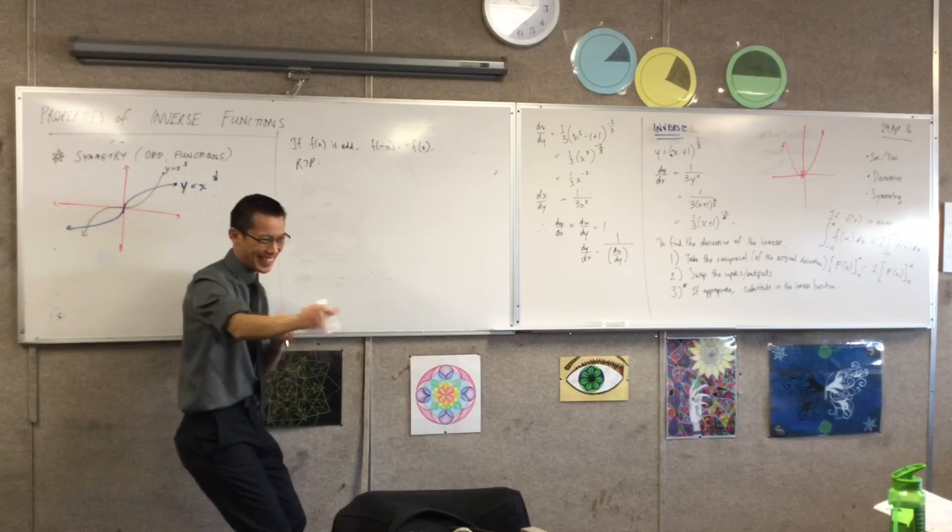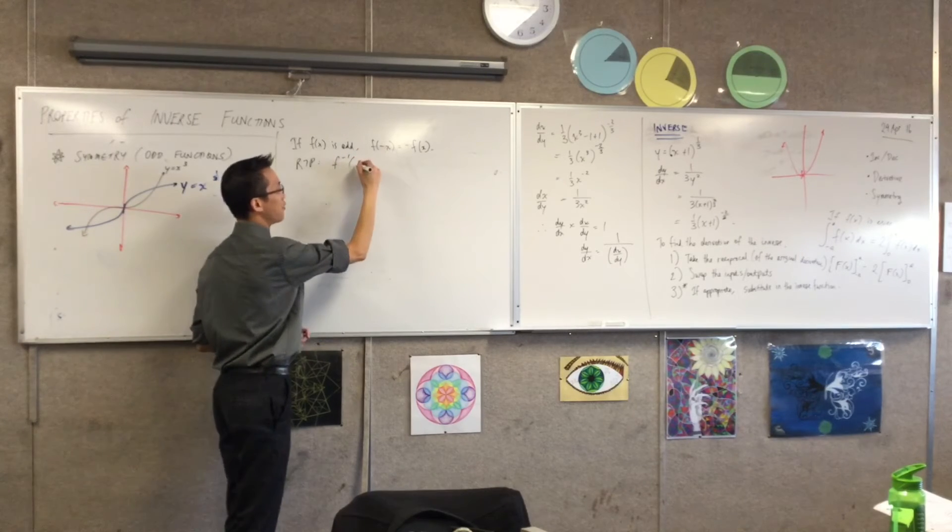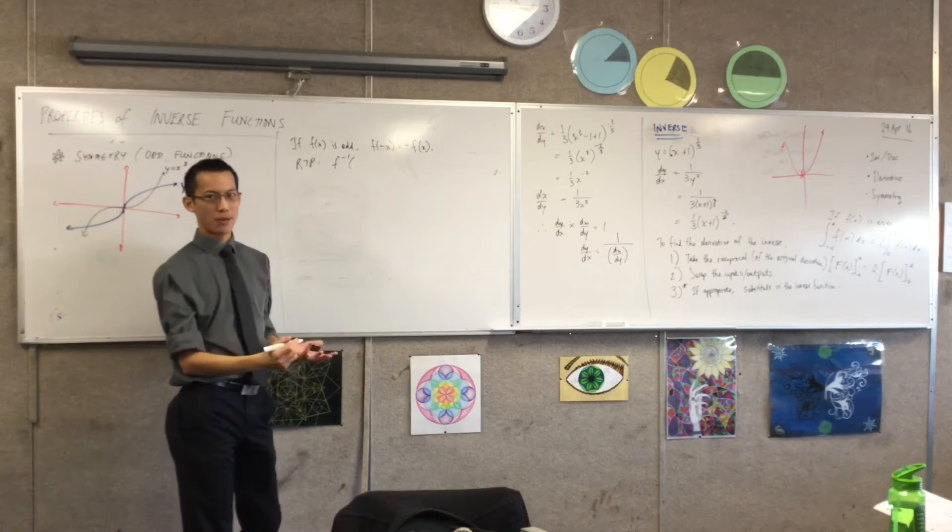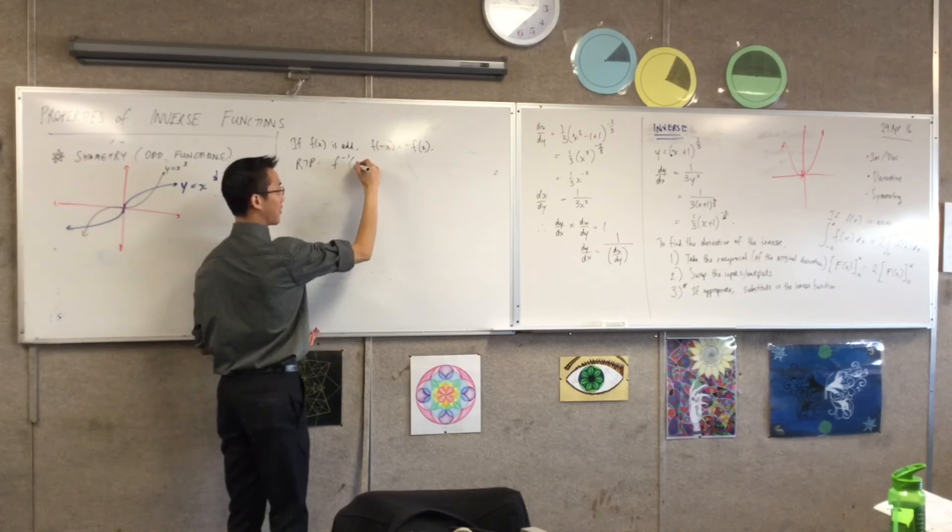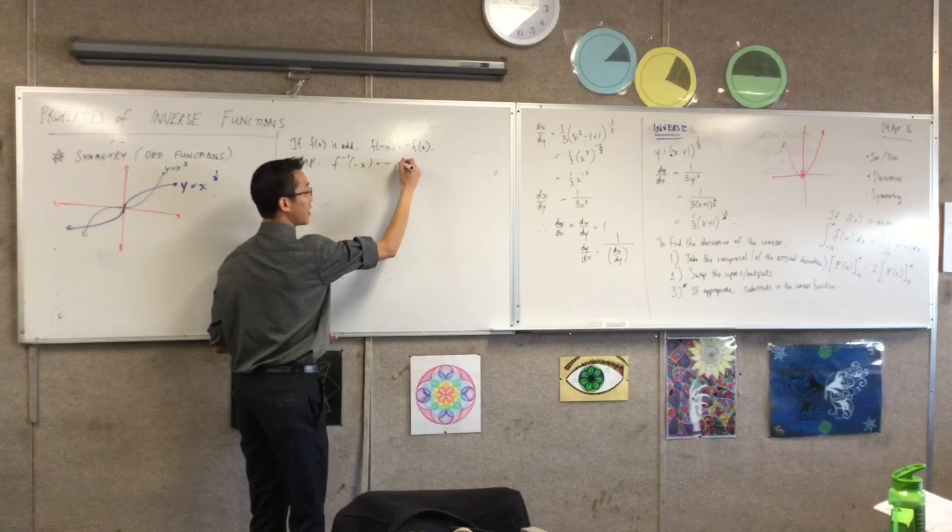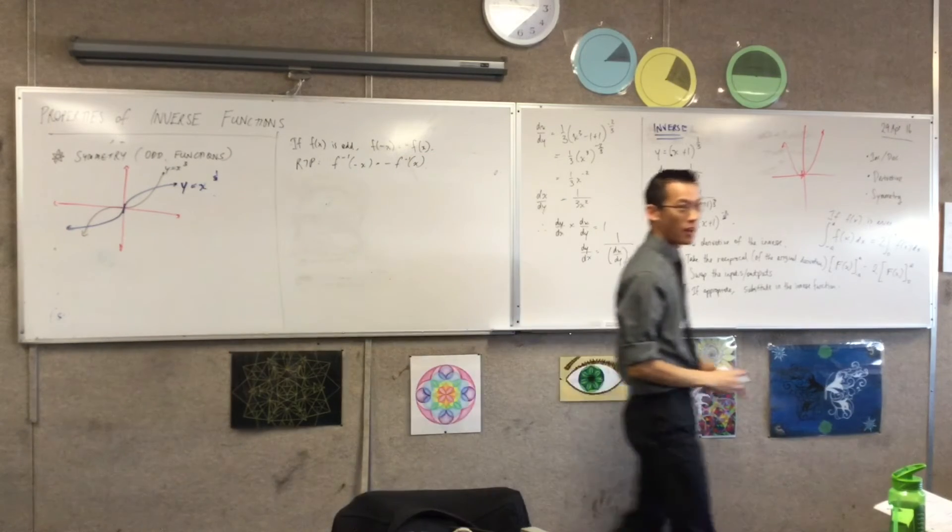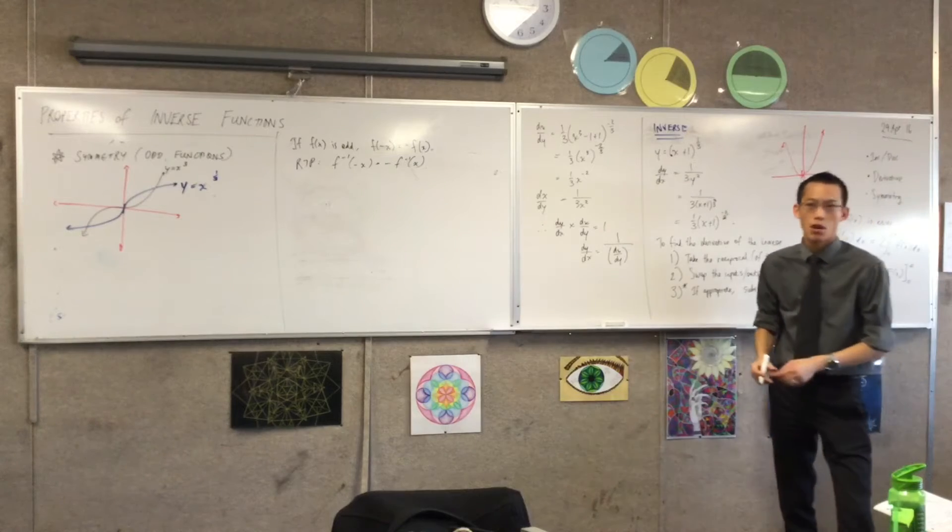F to the power minus one. All that. Inverse. Inverse. X of what? What should I put in there? Of negative X? Yeah. If it's odd, then it should be negative. Yeah, that, right? Like it's exactly the same as the top line, because all that is, is the definition of a non-function. Okay?